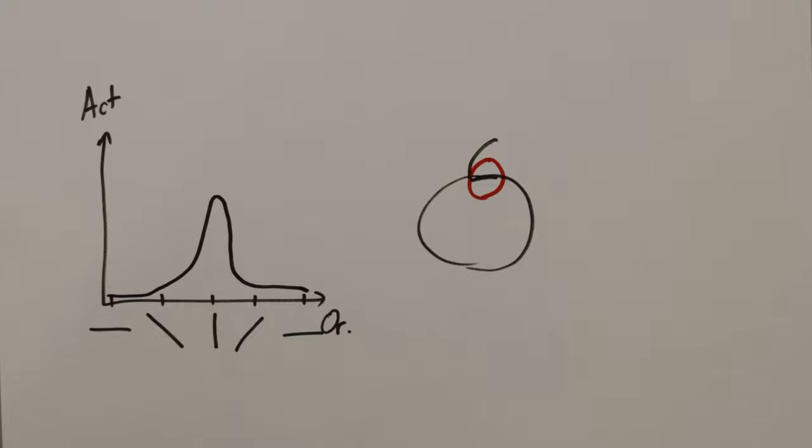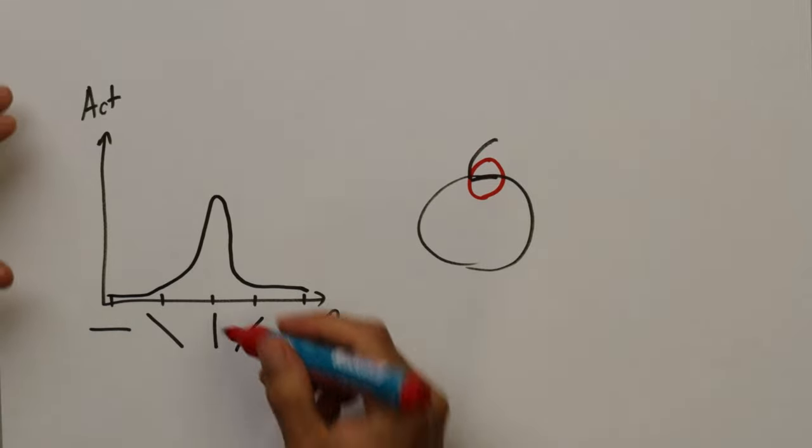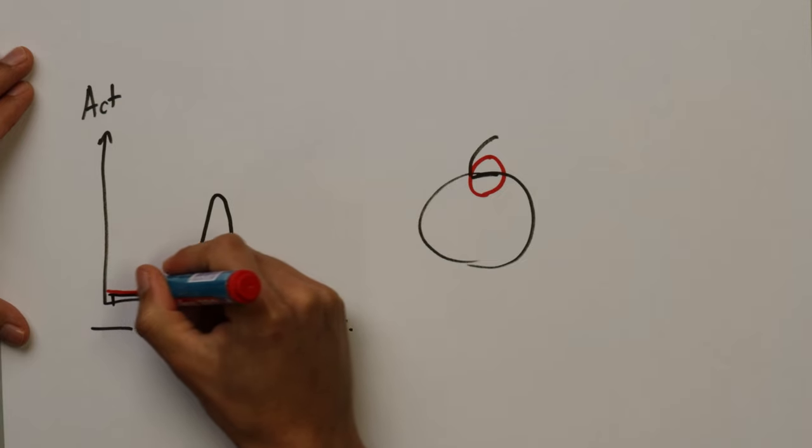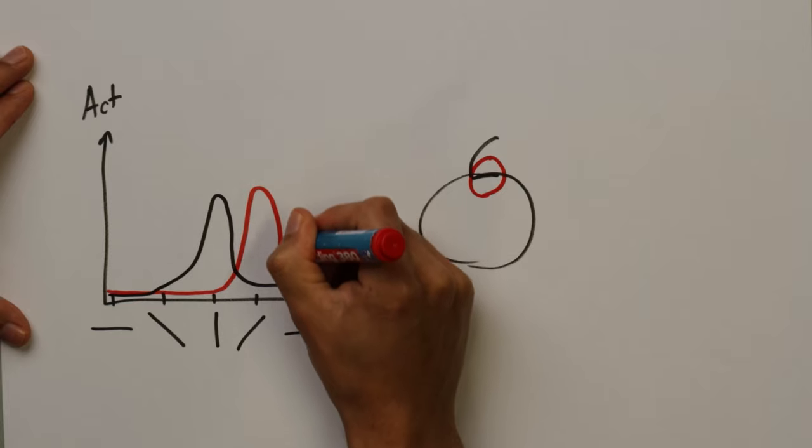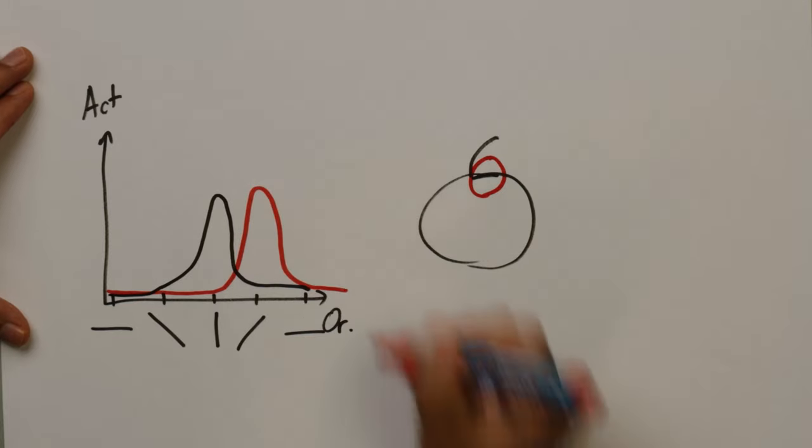Other neurons may be tuned to different orientations. For example, there may be neurons that are tuned to edges that have orientation of 45 degrees. Their tuning curve would look like this for example.